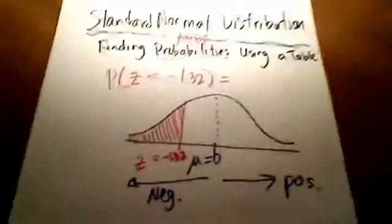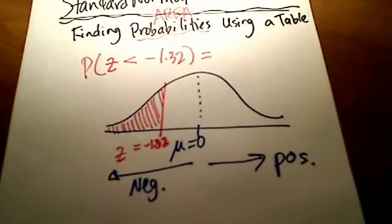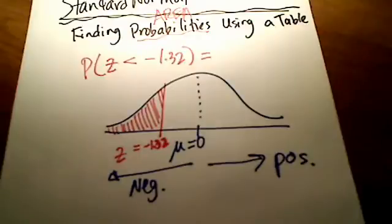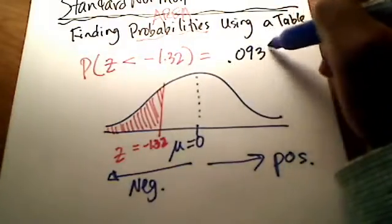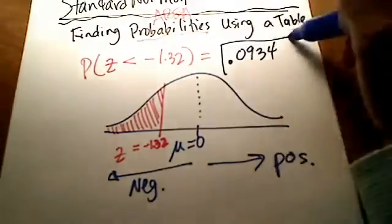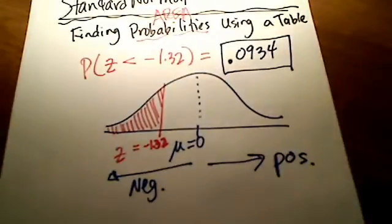You can look it up in your own book, but you can see that hopefully you'll get a value of .0934. So there's my answer for this first problem. So .0934. Typically, if you're using my Math Lab especially, it wants it rounded off to four decimal places. And thank goodness the table already does that for you.